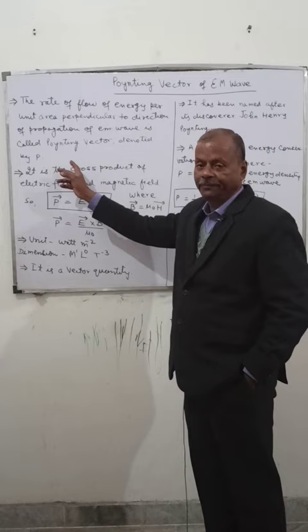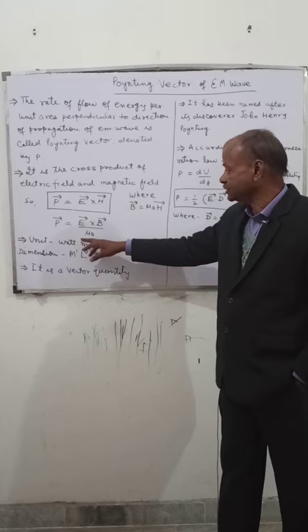It is the cross product of the electric field and the magnetic field. P equals E cross H. This is now E cross B upon mu naught.